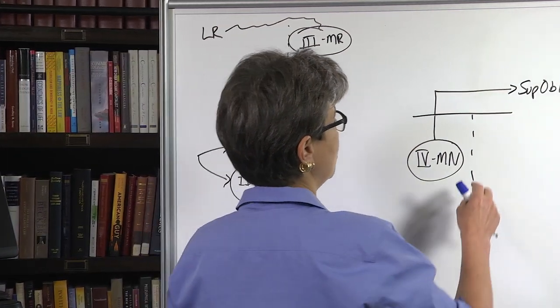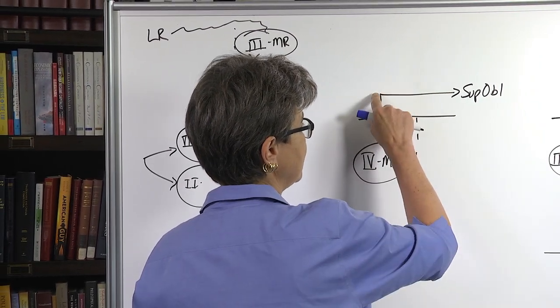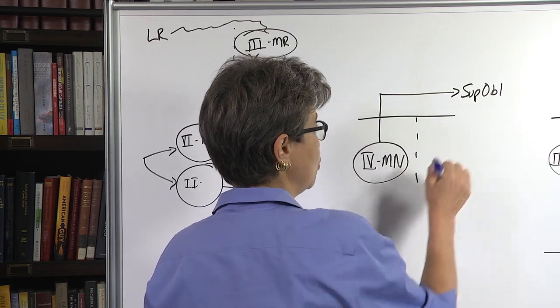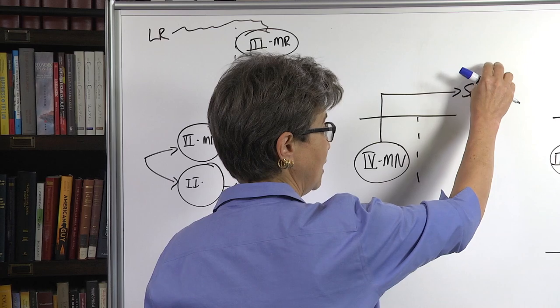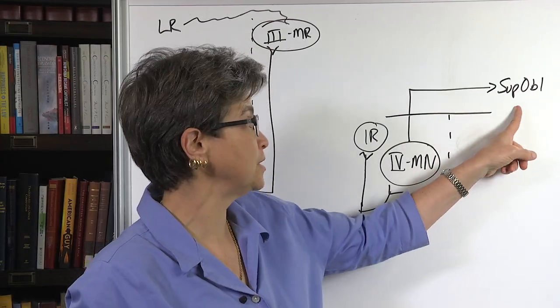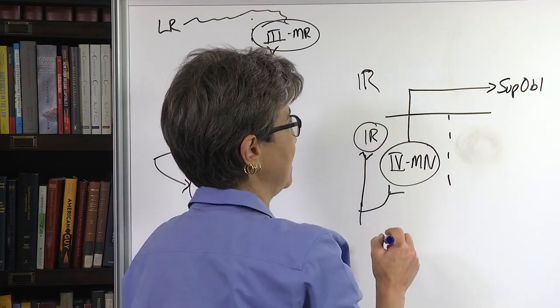And to support that, what happens is that the trochlear motor neuron sends an axon out that crosses the midline so that it innervates the other superior oblique. The superior oblique on one side is paired with the inferior rectus on the opposite side.